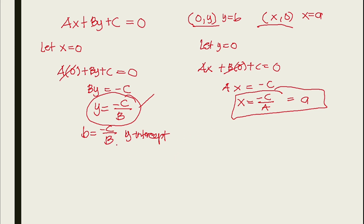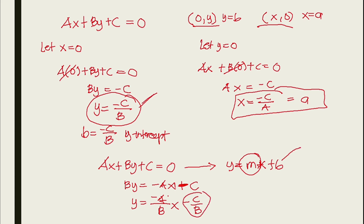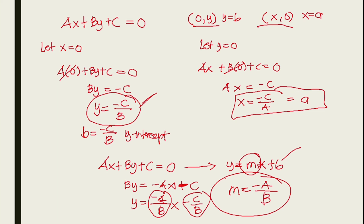To find the slope, we take ax + by + c = 0 and transform it into slope-intercept form y = mx + b. Rearranging: by = -ax - c, then dividing each term by b gives y = (-a/b)x - c/b. Comparing this with y = mx + b, we can see that the slope m = -a/b, and the y-intercept is -c/b, consistent with what we found before.